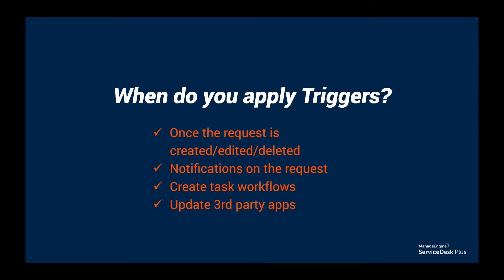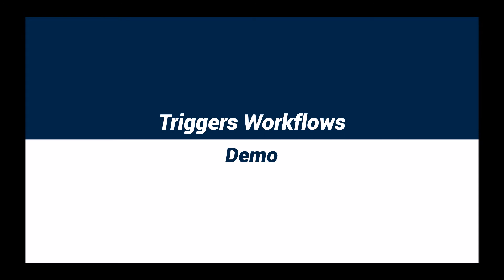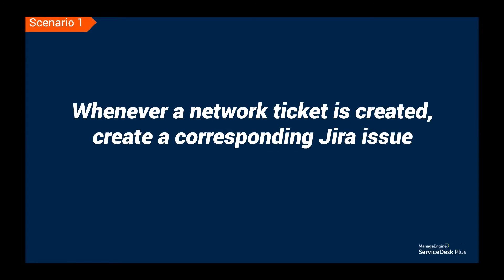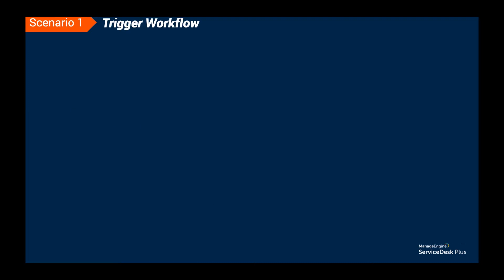Technicians can configure notifications, tasks, and webhooks as a trigger. With these webhooks set up as triggers, setting up integrations with third-party tools is so much easier. Here's an example scenario: a network ticket is created and you want an issue to be raised in Jira whenever a network ticket comes in. The workflow is simple — when the category is set to network, that ticket should correspondingly raise an issue in Jira. This is when a trigger comes in handy.